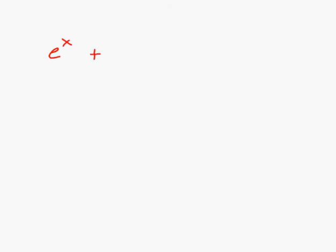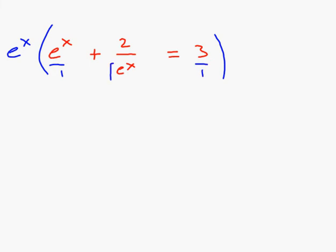Let me give you another one: e to the x plus 2 over e to the x equals 3. A common move whenever you have a fraction in your equation is to multiply through by the common denominator. I'll multiply every term by e to the x to clear the denominator.